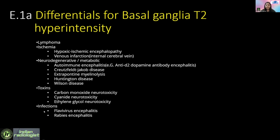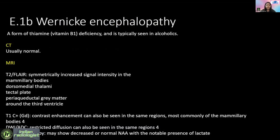Almost any kind of viral encephalitis can lead to this picture, and even lymphoma can cause it. In Wernicke's, however, we see T2/FLAIR hyperintensities that are symmetrical but located in the mammillary bodies, dorsomedial thalamus, tectal plate, periaqueductal gray matter, and around the third ventricle.